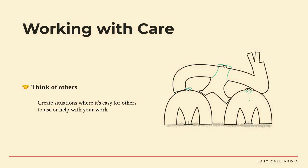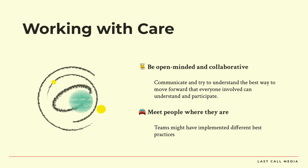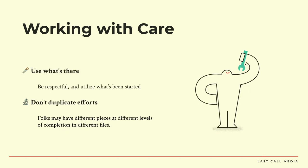How do you do it well? We want to work with care — think of others. Try to create situations where it's easy for others to use or help with your work. Communicate that you're working on this. Make sure you're in a file that people can access — in the organization or team inside Figma or Sketch, or on a drive somewhere that other folks can access. Be collaborative. Try to move forward in the best way that everyone involved can understand. Teams might have implemented different best practices or started files in different places — try and use what's there, be respectful. For example, we were building a design system and another vendor had a beautiful organization system while we had more components, so we combined those into the best case scenario and everybody won.